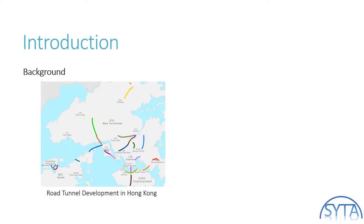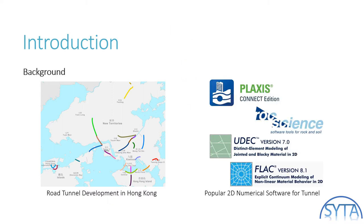Most of the lands in Hong Kong are mountainous terrains. With the demand of transportation increasing, one solution is to develop tunnels between major housing regions. From this layout plan, we can see that there have been many road tunnel projects proposed by the government of Hong Kong in recent years. From the engineer's point of view, there are so many geotechnical numerical tools available for designing tunnel excavation.